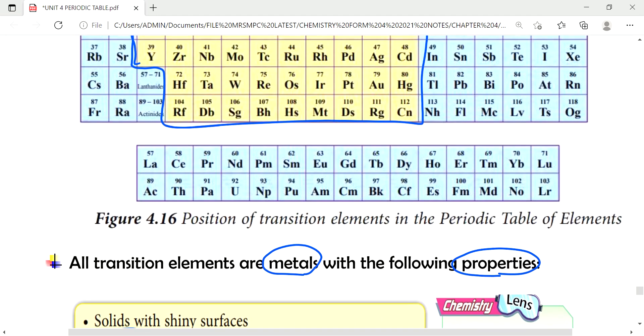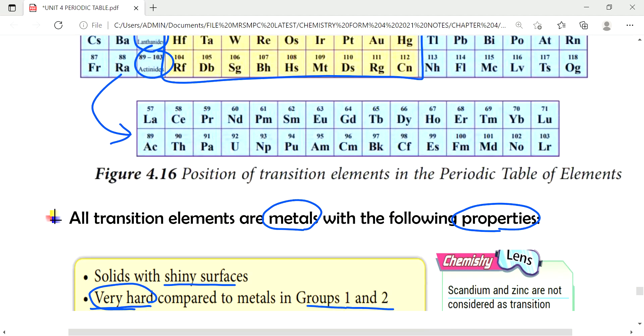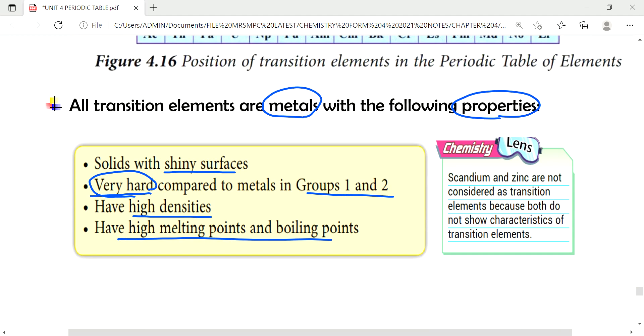Scandium and zinc are not considered as transitions element because both do not show characteristics of transitions element.